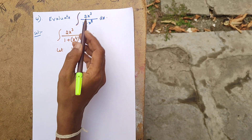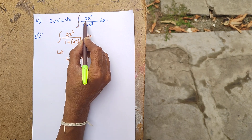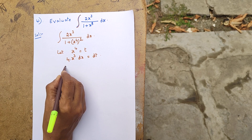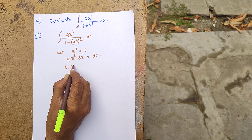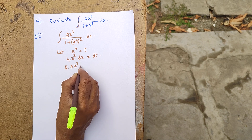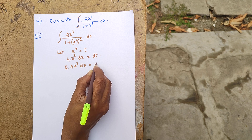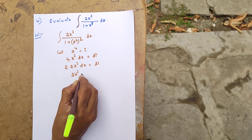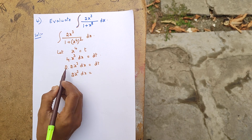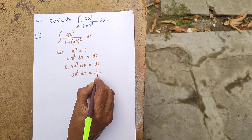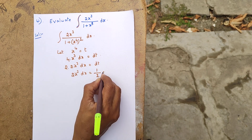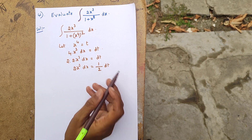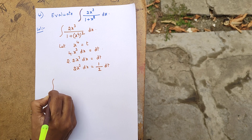Therefore, 2x³ dx is equal to dt over 2. So we can substitute 2x³ dx with dt over 2.